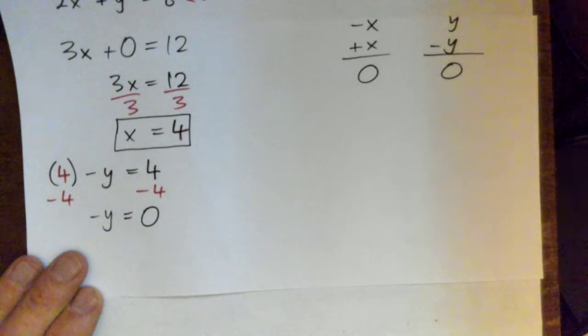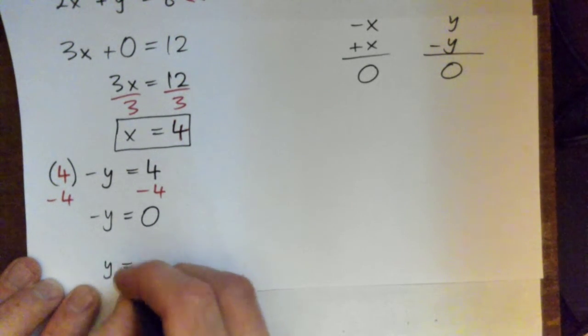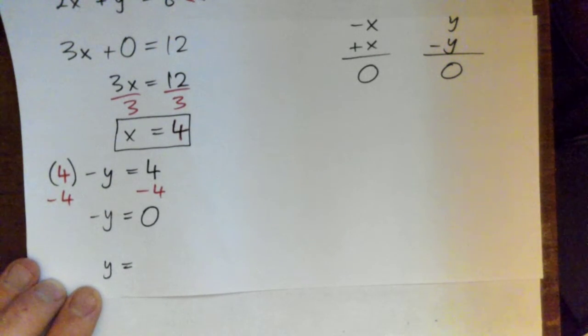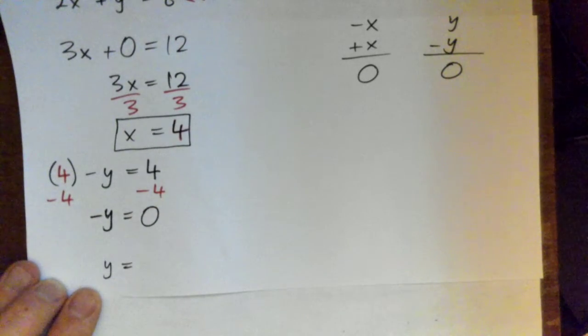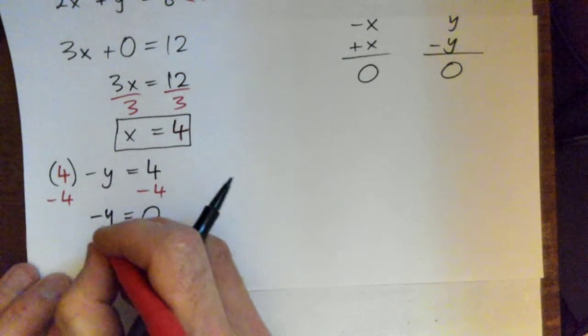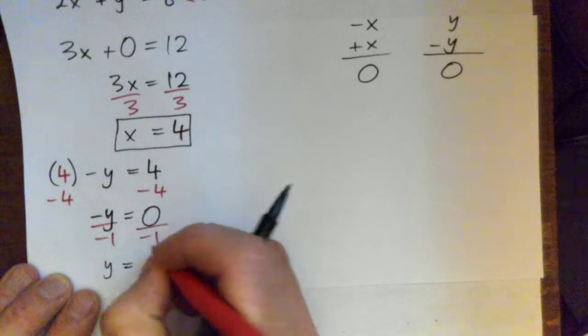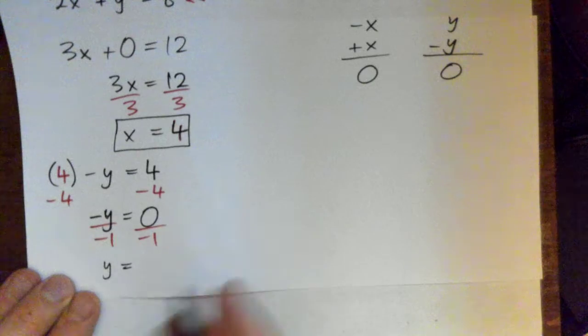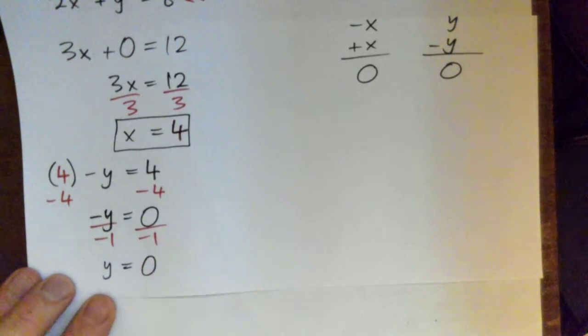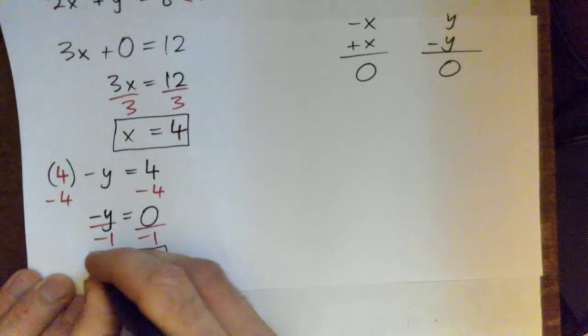Okay, so what now? Nope, that's negative y. How do you get positive y? Divide by negative 1, right. So y equals 0 over negative 1, y equals 0. So x is 4, y is 0.